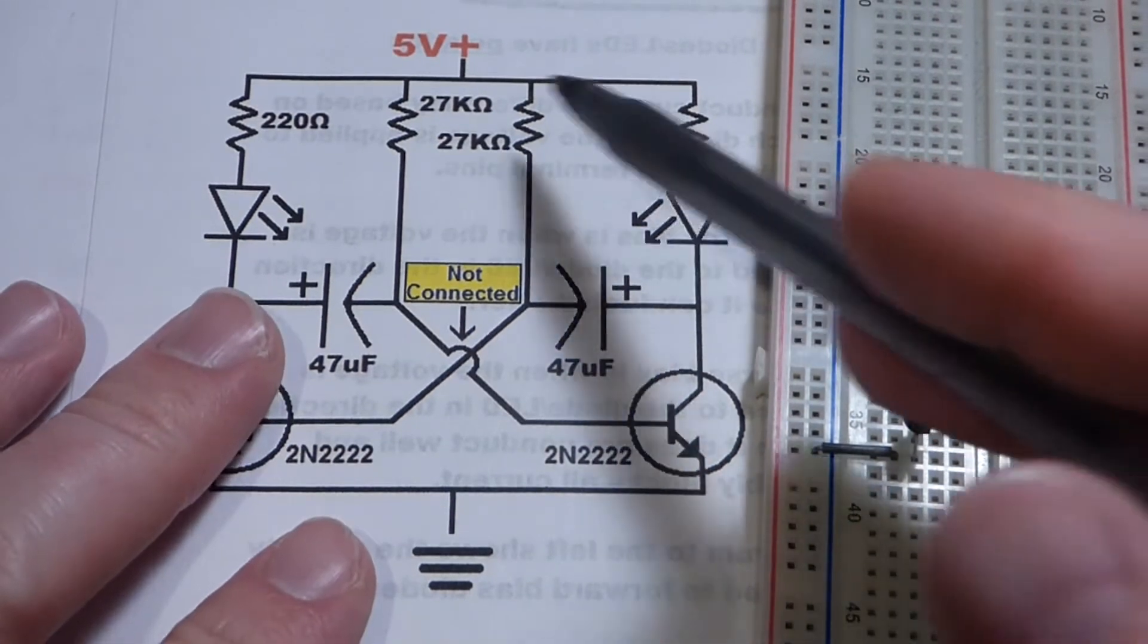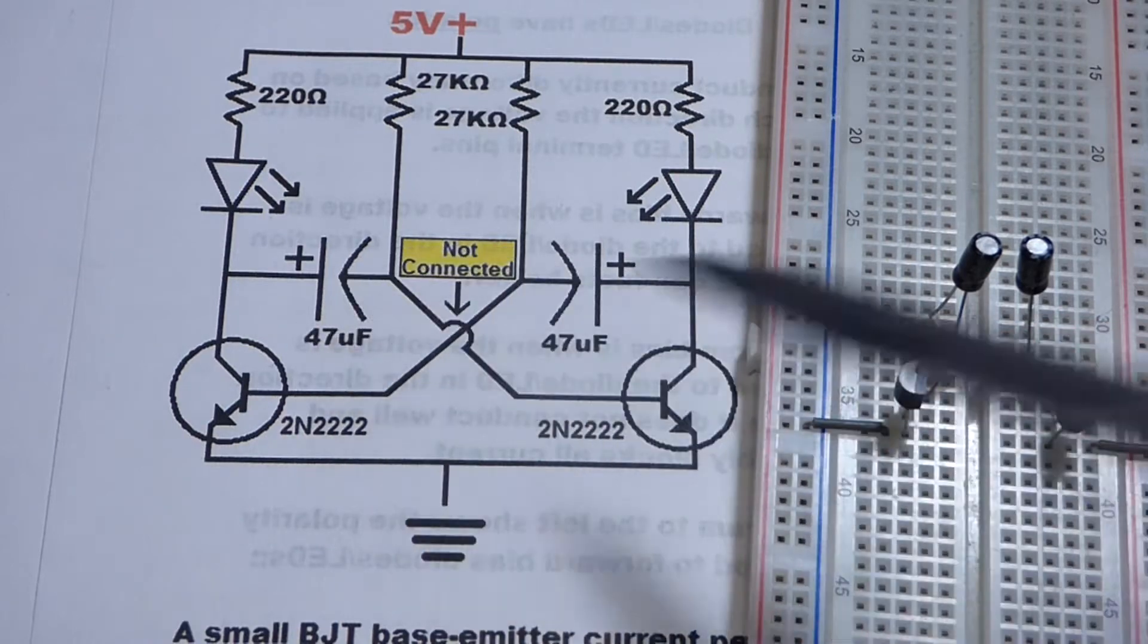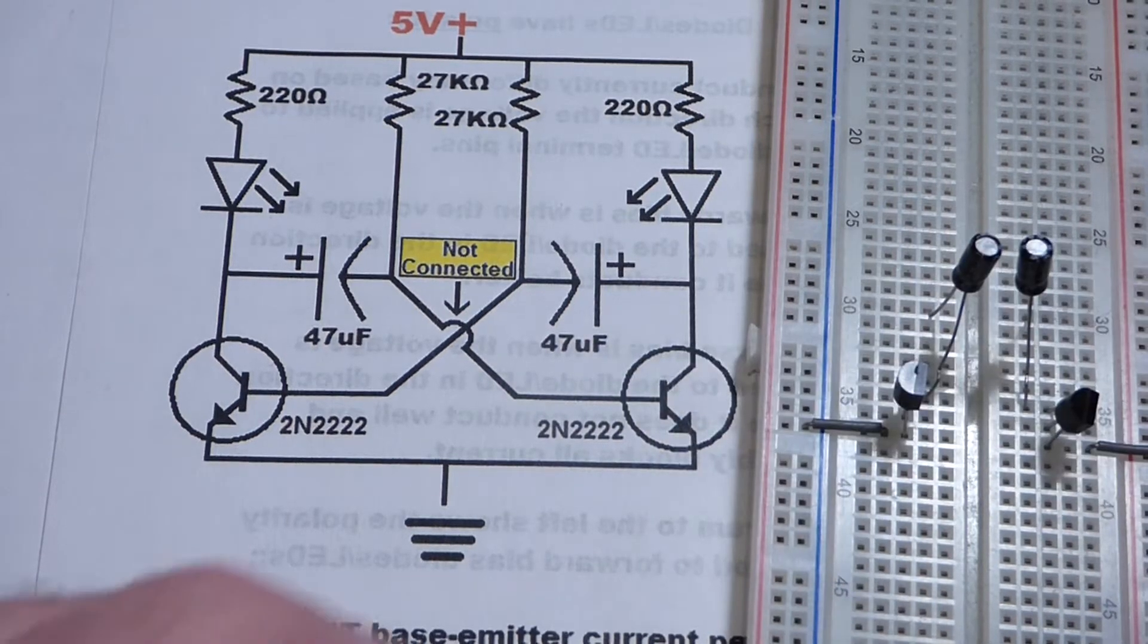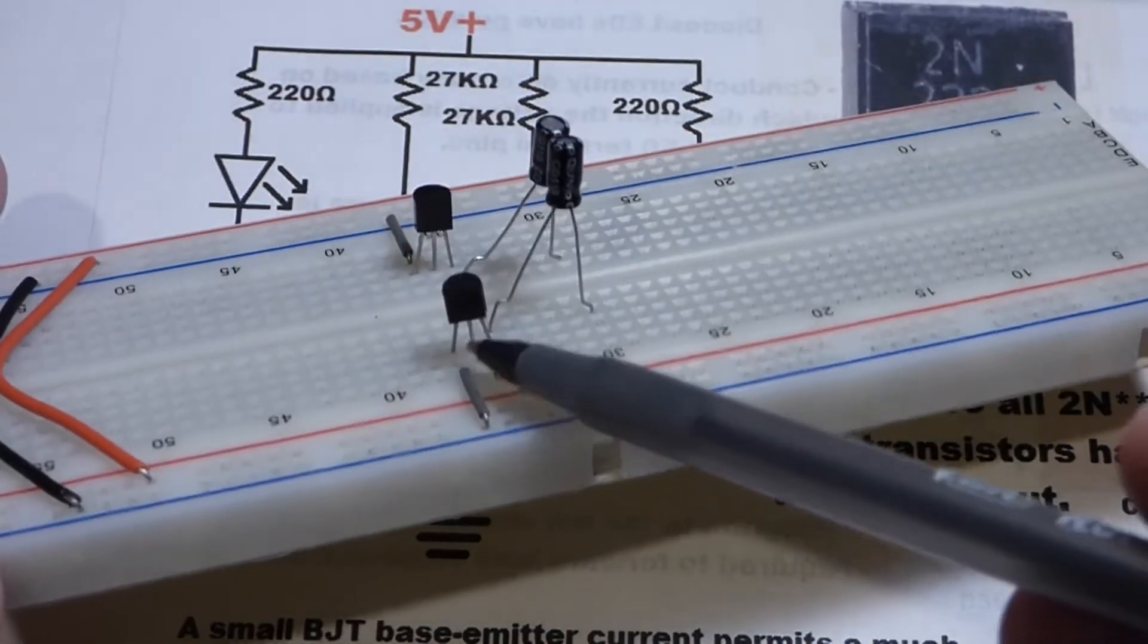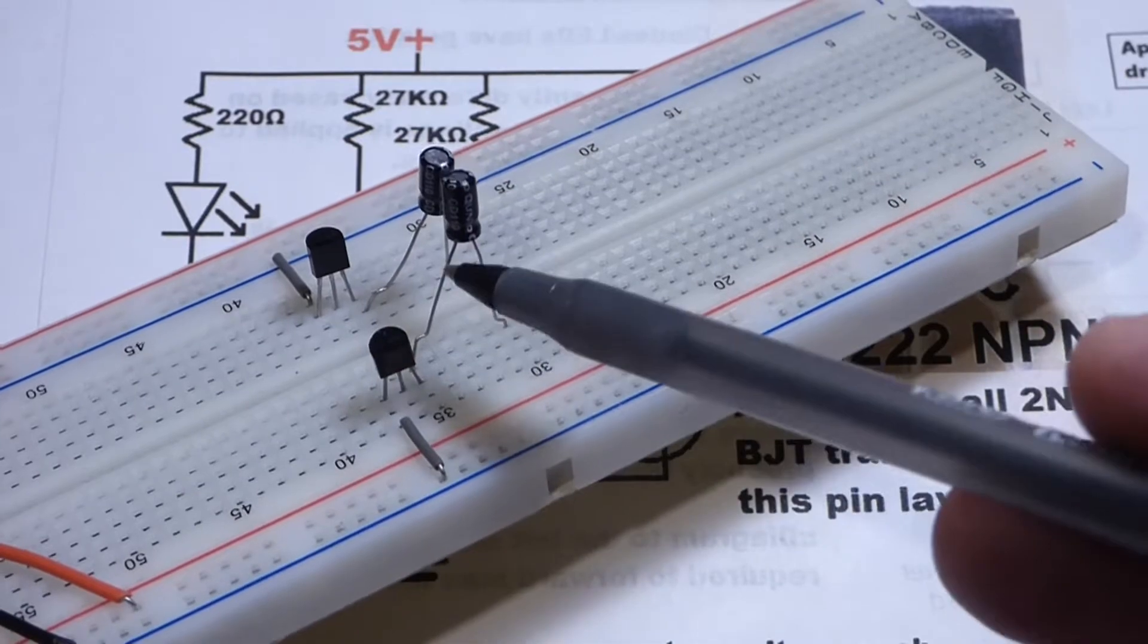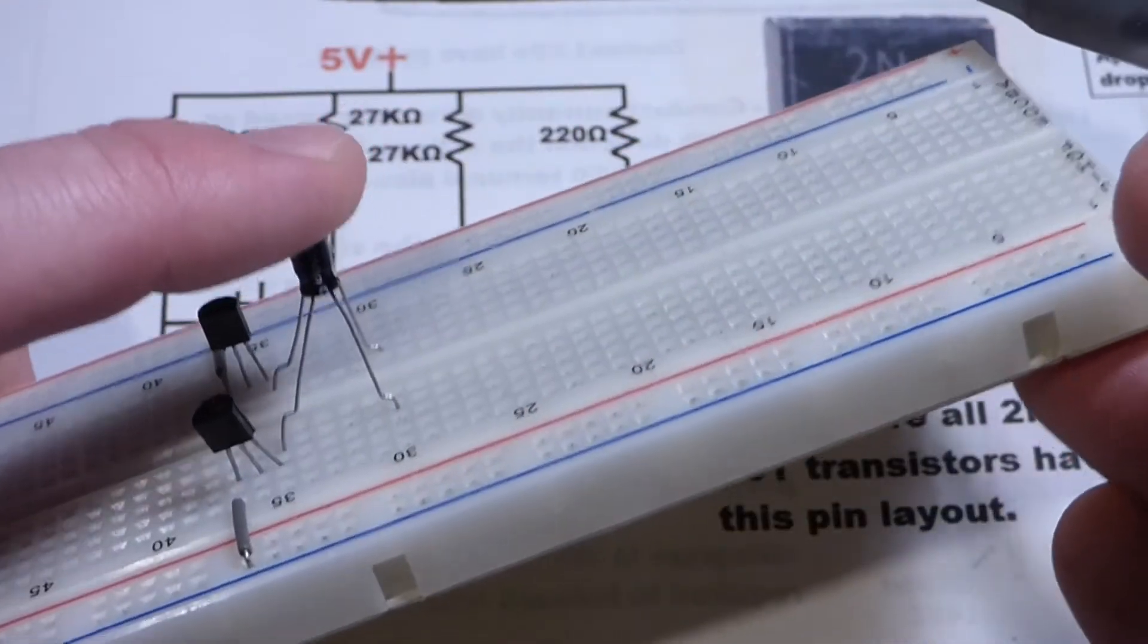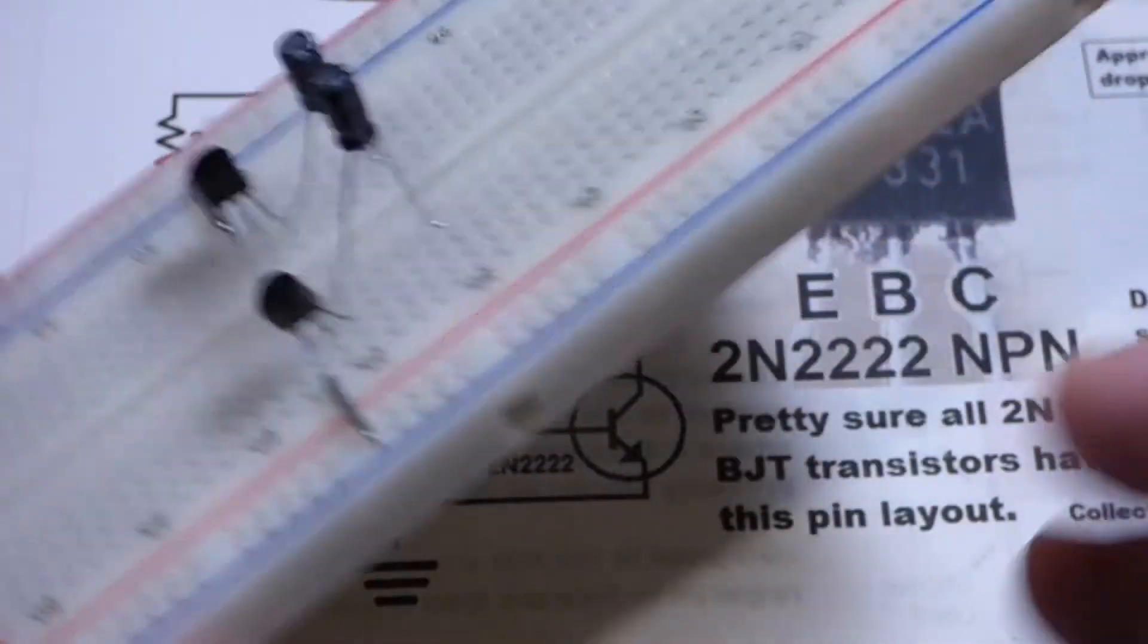Now I got the capacitors on the board. The values are different on the schematic than what we're building. I'm modifying the circuit for a different video where we use 9 volts instead of 5 volts. These are 1 microfarad capacitors. The positive side is connected to the collector of the transistor. The negative side with the shorter lead and the dashes I have up here.